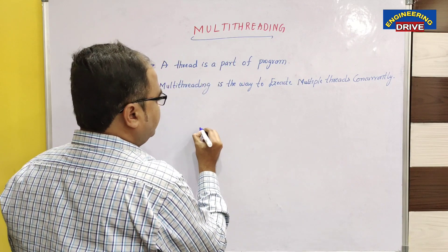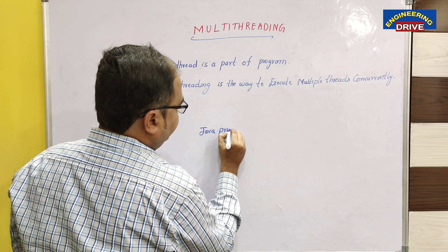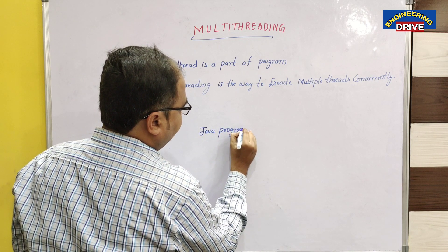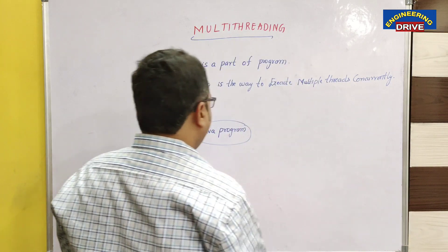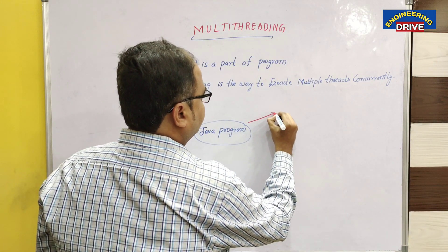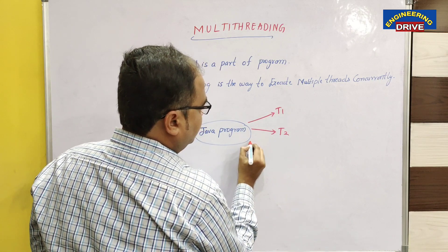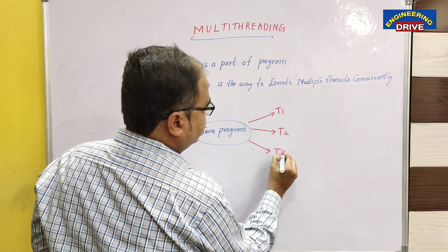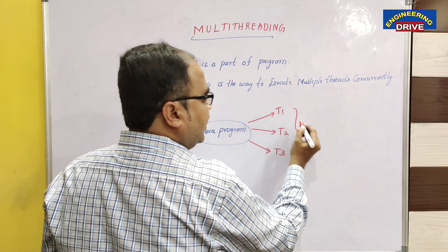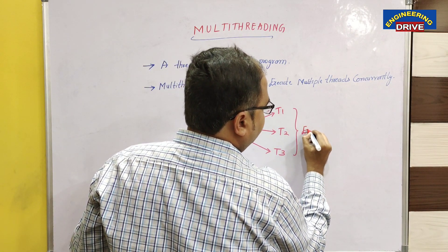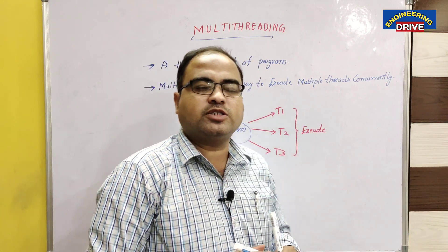Let us say there is one Java program. What I am going to do is divide this Java program into some parts: the first part is Thread One, the second part is Thread Two, and the third part is Thread Three. And all these three threads, I am going to execute them simultaneously. We call this concept as multithreading.